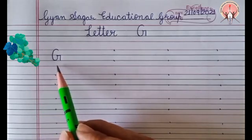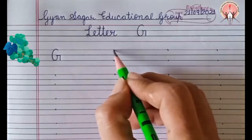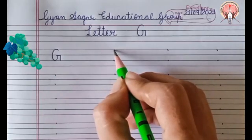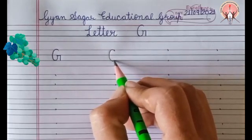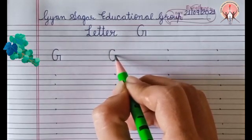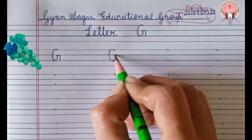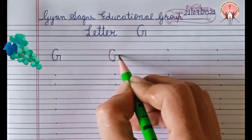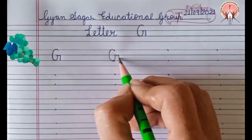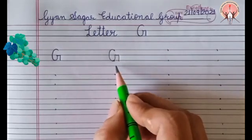G. How to write G? Put your pencil on the dot. Come down with a big curve. Go to the middle and draw a small sleeping line. Then come down with a small standing line.